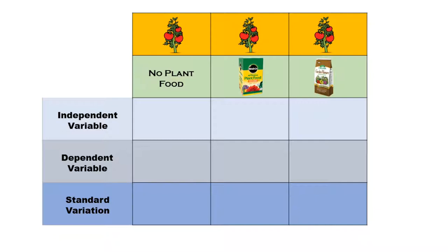In this experimental setup, we need to identify what the independent variable is. The independent variable is the variable that you are manipulating — this is the variable of the experiment. In this case, whether we have plant food or not, and the type of plant food we have, is the independent variable. This is what we're looking at.